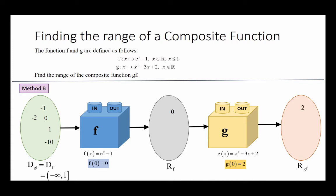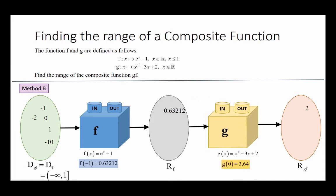Next, let's look at an example using the value negative 1 from the domain of gf. If we feed negative 1 into function f, it will work on this value and come up with an output, which will form part of the range of f. Then function g will take in this value from the range of f, work on it, and produce an output. This output will form the set of values known as the range of gf. As you can see, these values are exactly the same as those found in Method A.